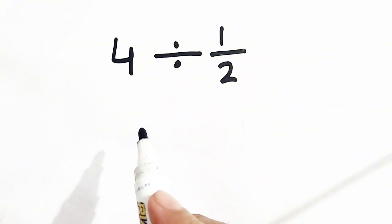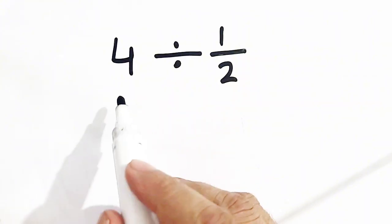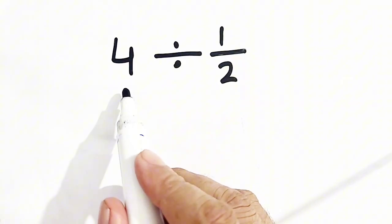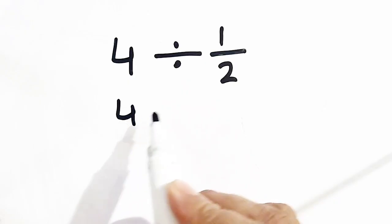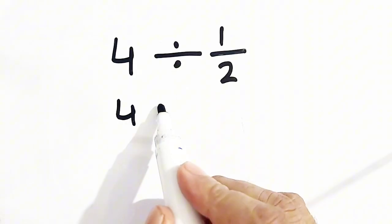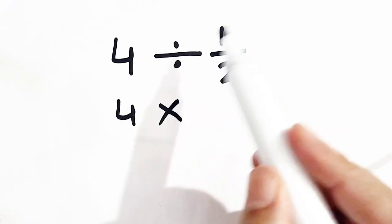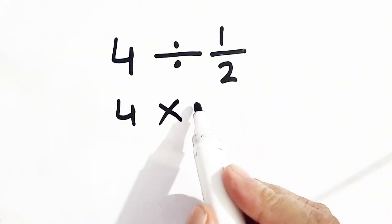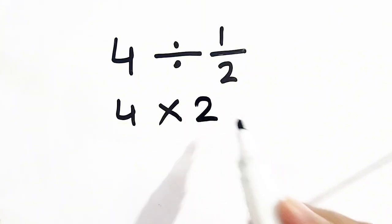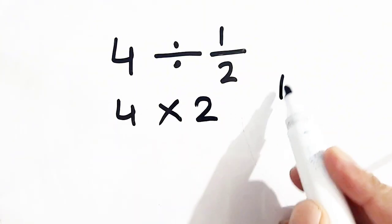We will solve this question correctly: 4 is kept itself, divide is changed into multiplication, and we flip 1 by 2, so it becomes 2. Here we have applied KCF.